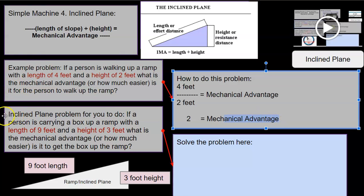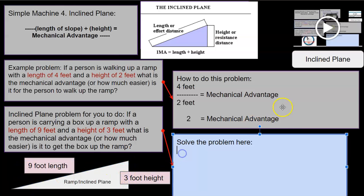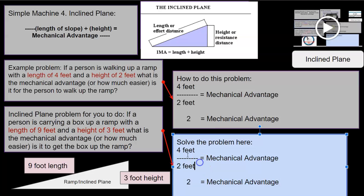Inclined plane problem for you to do. If a person is carrying a box up a ramp with a length of nine feet and a height of three feet, what is the mechanical advantage, or how much easier is it to get the box up the ramp? I've got this simplistic little picture down here which shows a ramp, also known as an inclined plane. You've got a length of nine feet right here and a height of three feet. So you just grab this equation, put it right there, get rid of these numbers, and then put numbers in from the equation. You'd put your nine feet up here and your three feet right here. Then you would do nine divided by three and you would get your answer. The feet, or the units, would cancel out. I fully believe in your ability to do this problem.